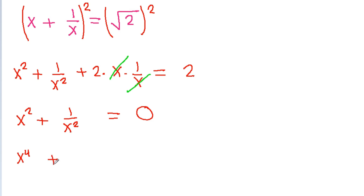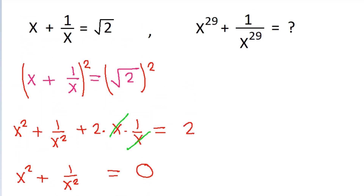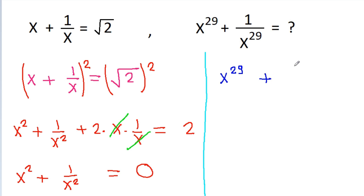So x square plus 1 by x square equals 0. From this we get x power 4 plus 1 is equal to 0, or x power 4 is equal to minus 1. Now we have to find the value of x power 29 plus 1 by x power 29.